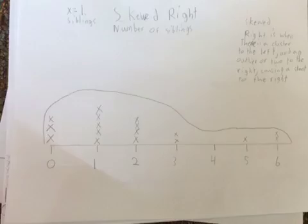A skewed right position is when there is a cluster to the left and an outlier or two to the right, causing a slant to the right. This is similar to the skewed left position, as the skewed left is the exact opposite.